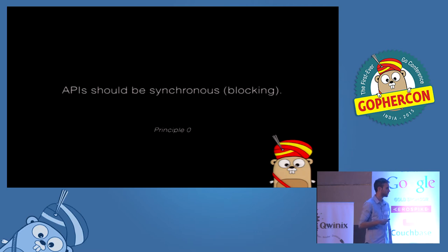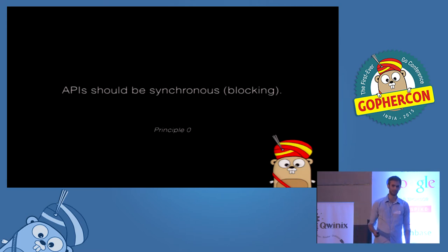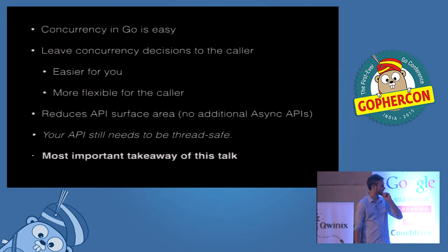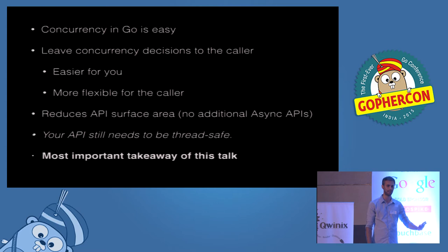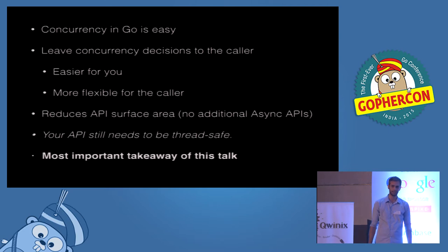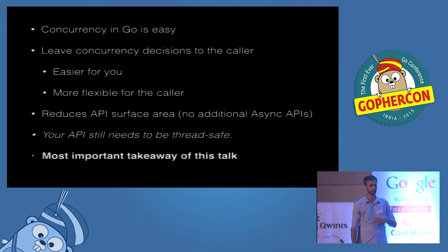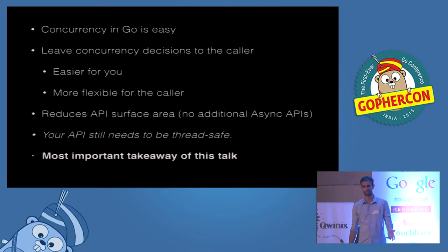That leads me to the first principle of designing APIs that use channels: don't do it. APIs should be synchronous — they should be blocking as much as possible. The reason your API should be synchronous is because concurrency in Go is so easy that you don't need to make async APIs. The concurrency primitives are so good that callers can do it themselves, making it easier for you as the library author. It's more flexible — your caller can call your API synchronously or asynchronously.